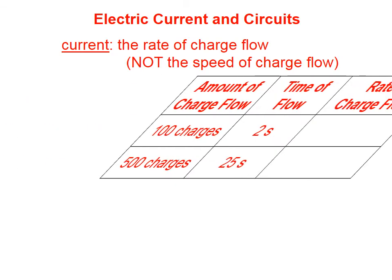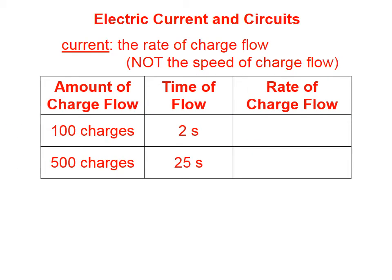Electric current is the rate of charge flow. It's not the speed of charge flow, it's the amount of charge per unit time. It doesn't necessarily say how fast the charges are moving, it just says how many charges are passing a fixed point in a certain amount of time.